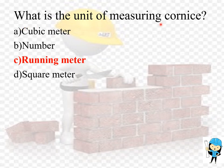What is the unit of measuring cornice? Cornice is any horizontal decorative molding that crowns a building or furniture element over a door or window. Cornice is measured in running meter.